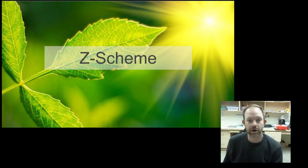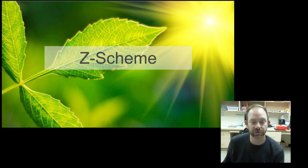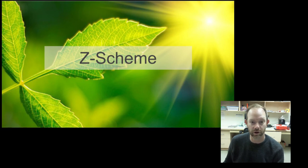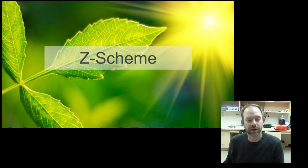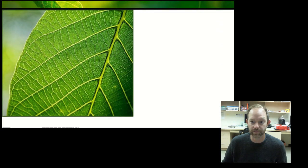Hi there folks. Today we're going to talk about the light reactions in photosynthesis. We're going to first focus on the path that electrons take as they travel through the membrane of the thylakoid, and the energy level in those electrons — you can kind of think of it as the shape of the letter Z, and so we call this the Z-scheme.